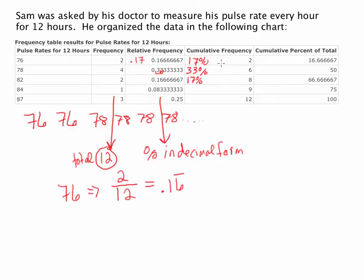The next column is cumulative frequency. You can think of cumulative as adding as you go. For 76, we're looking at all data values up to 76 — it occurred twice, and since there was nothing before 76, the cumulative frequency is also 2. For 78, it occurred 4 times, but cumulative frequency looks at everything up to and including 78. The only other value before it contributes 2, so 2 plus 4 makes 6. That's the cumulative frequency — summing all the frequencies of observations up to 78.